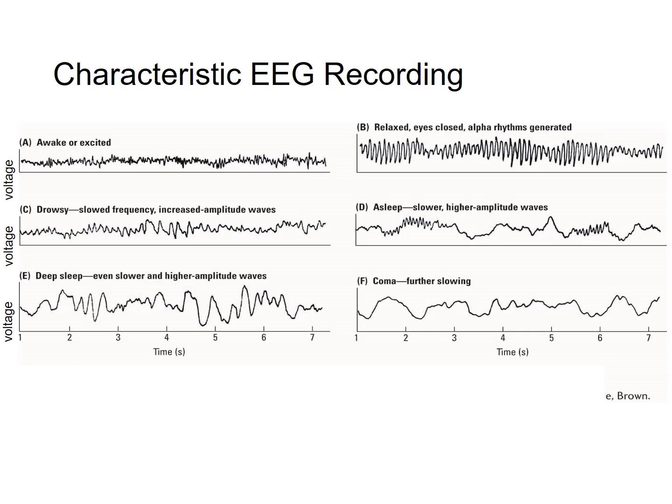In each graph, the y-axis is voltage — so positive charge or negative charge — and the x-axis is time. So when you have a very complex wave pattern, as in the upper right — relaxed, eyes closed, alpha rhythms generated — you have many waves per second of recording.